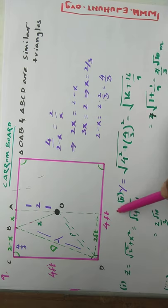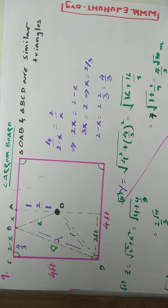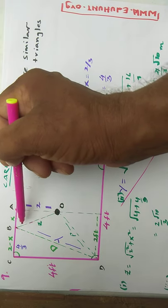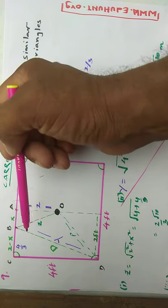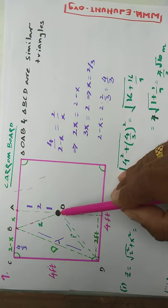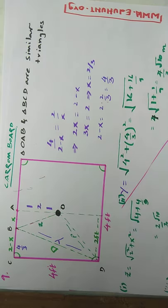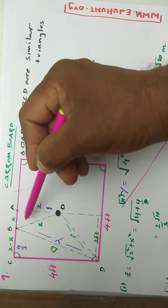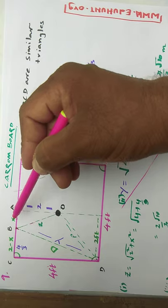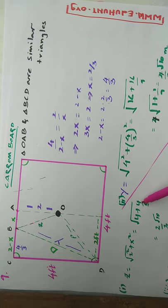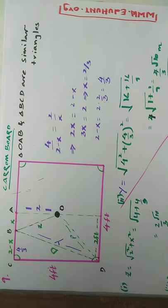Problem 2 asks for the distance between the center of the carom board and the point where the queen hits the opposite side — that is, from the center to point B. We call this Z. It is again a right-angle triangle. With one side equal to 2 (half the board) and the other side equal to X which is 2/3, we get Z equals the square root of 2 squared plus (2/3) squared, which equals the square root of 4 plus 4/9.